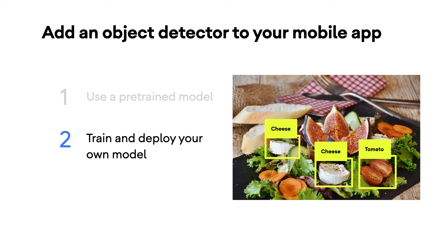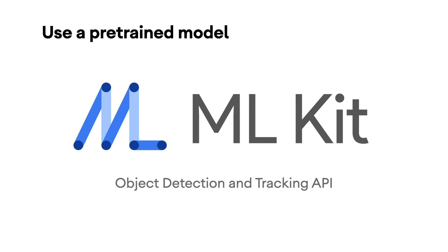The second approach — if no existing model works for you — is to train your own model. This approach is necessary if you want to detect objects specific to your domain. For example, detecting different kinds of food ingredients like cheese, tomatoes, or seafood, or detecting different kinds of road problems like potholes or road cracks.